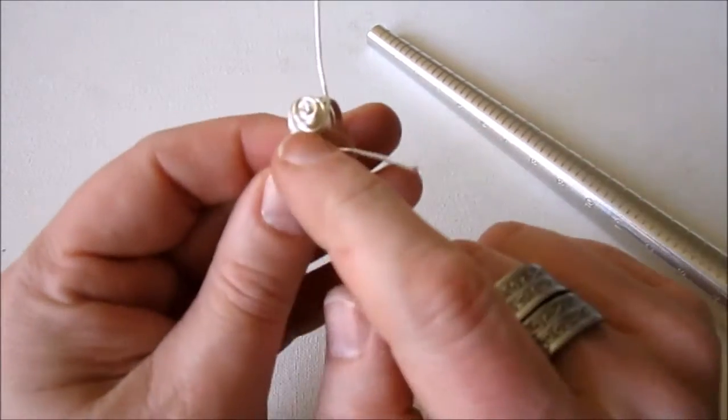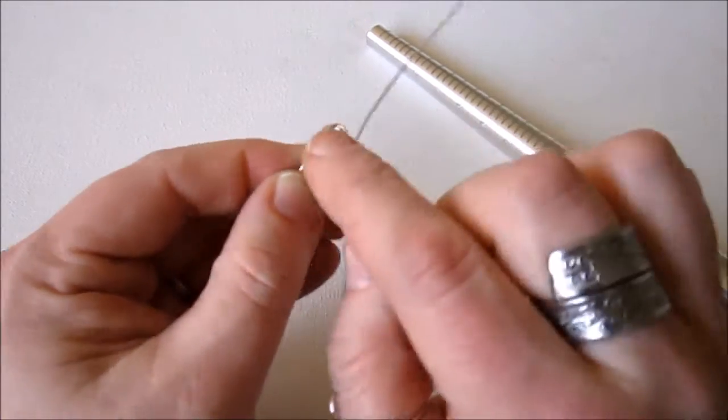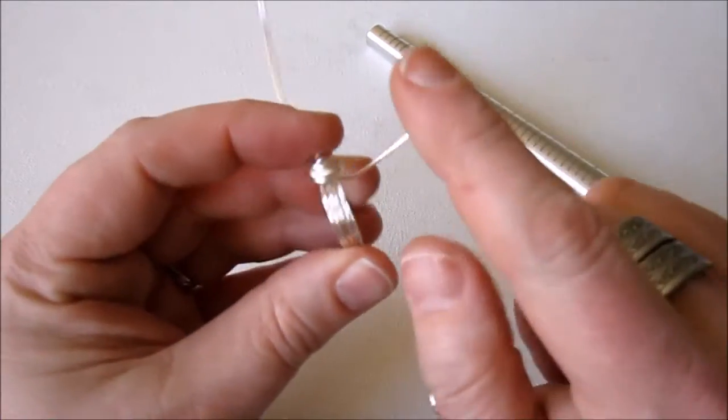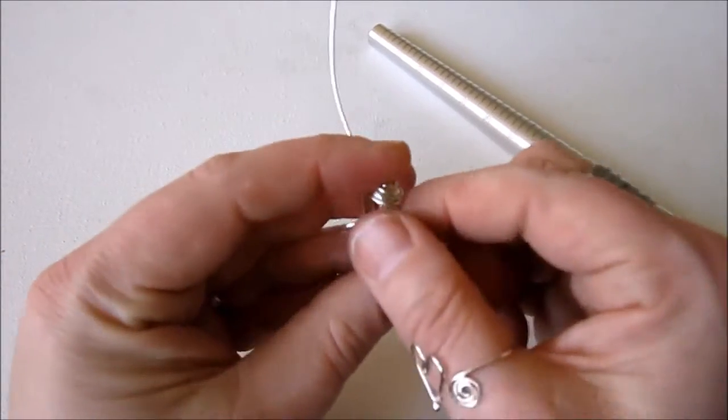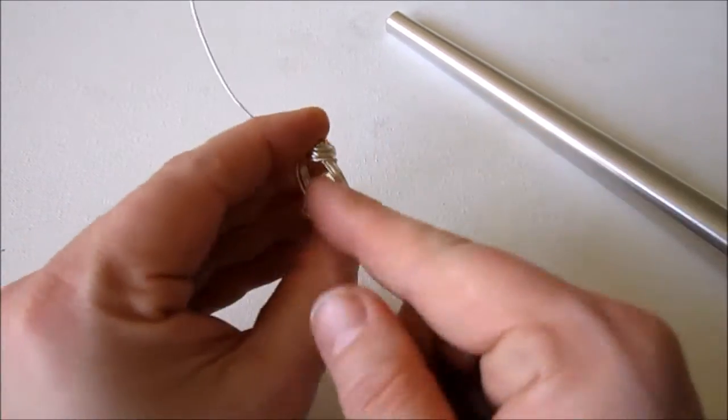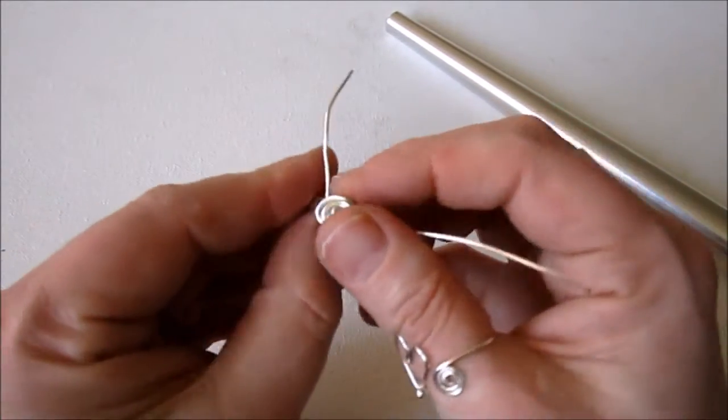And then carefully pull it off your ring mandrel. And then you're just going to take the wire, kind of go underneath that last wrap. Make sure it's under there. And then we're going to push the wire in through the ring band and pull it out the other side.